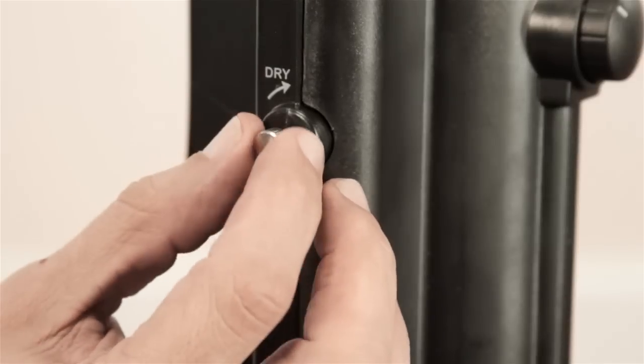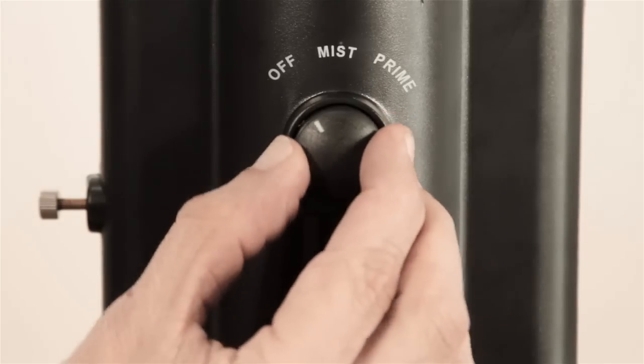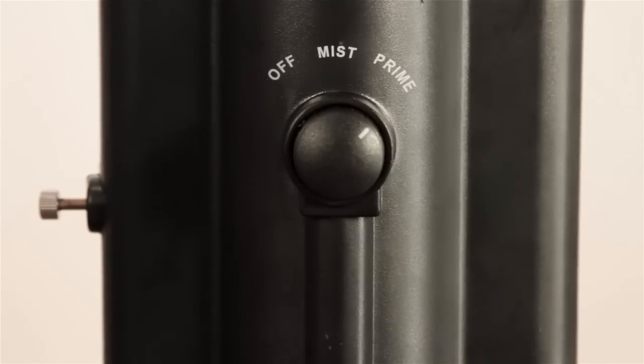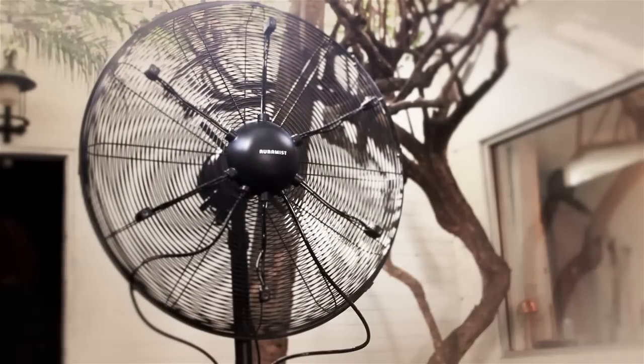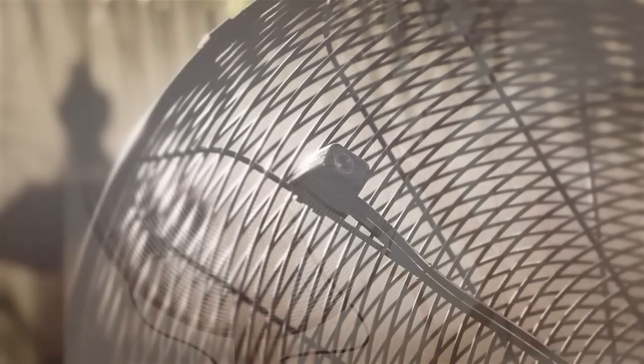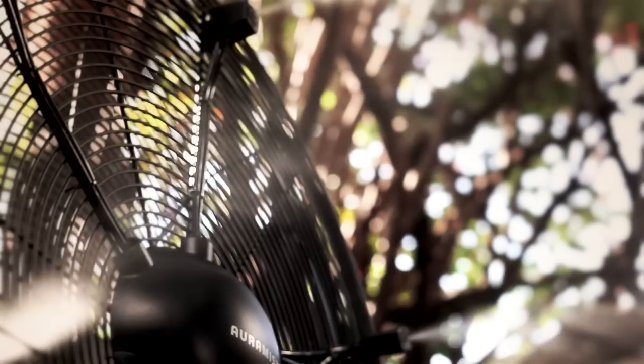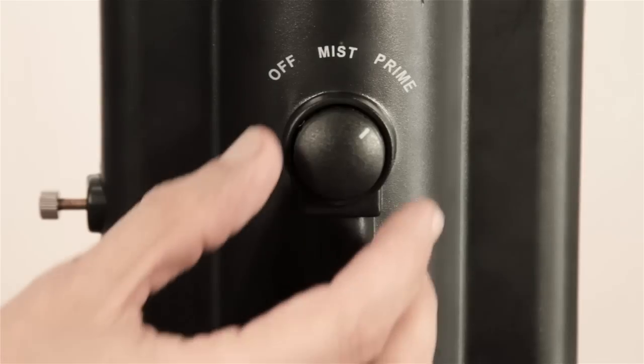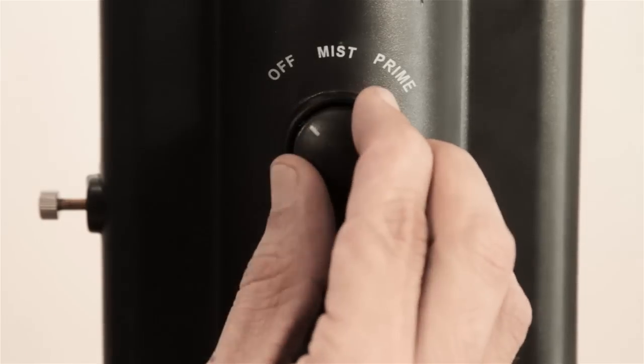Turn the flow control valve counterclockwise until it is fully open. Rotate the misting switch on the Brisa's fan pole assembly clockwise to prime. It may take a couple of minutes for your new misting fan to start misting. It is normal for air to exit the nozzles before your Brisa starts misting. Once water begins to flow from the nozzles, rotate the switch to mist. When you are finished misting, rotate the switch to off.